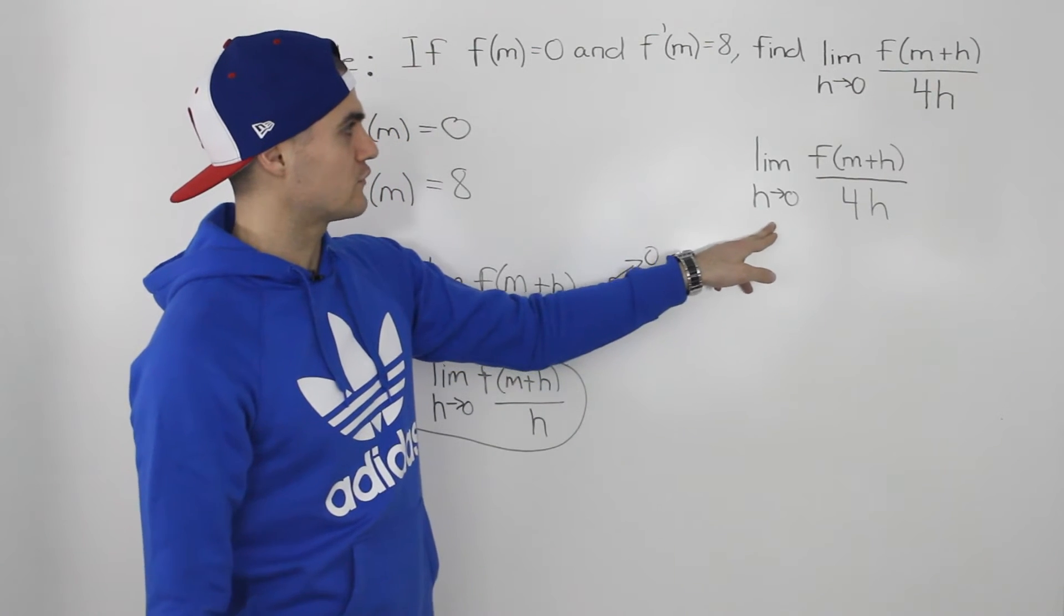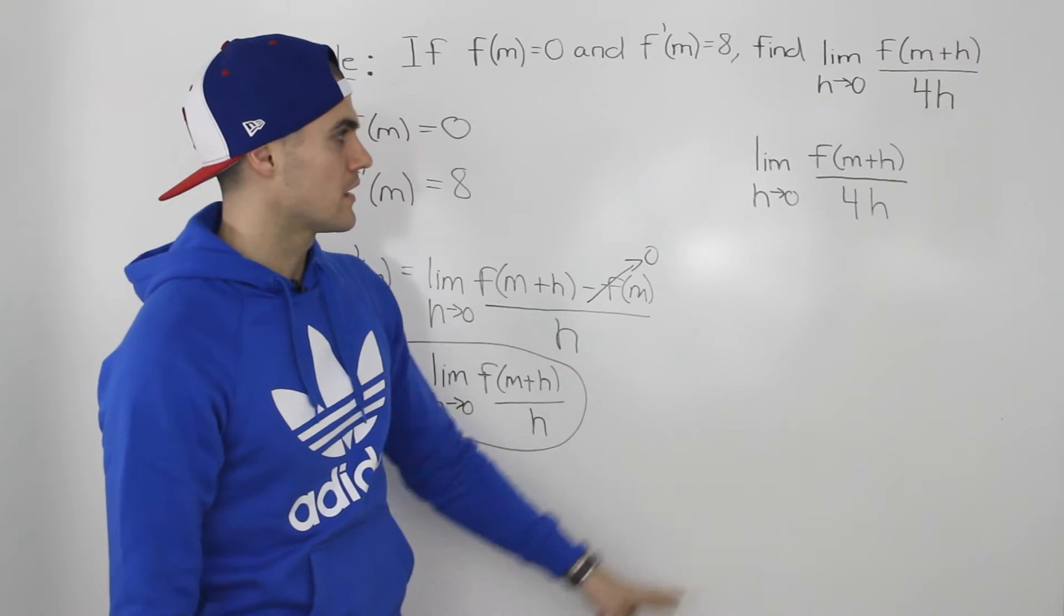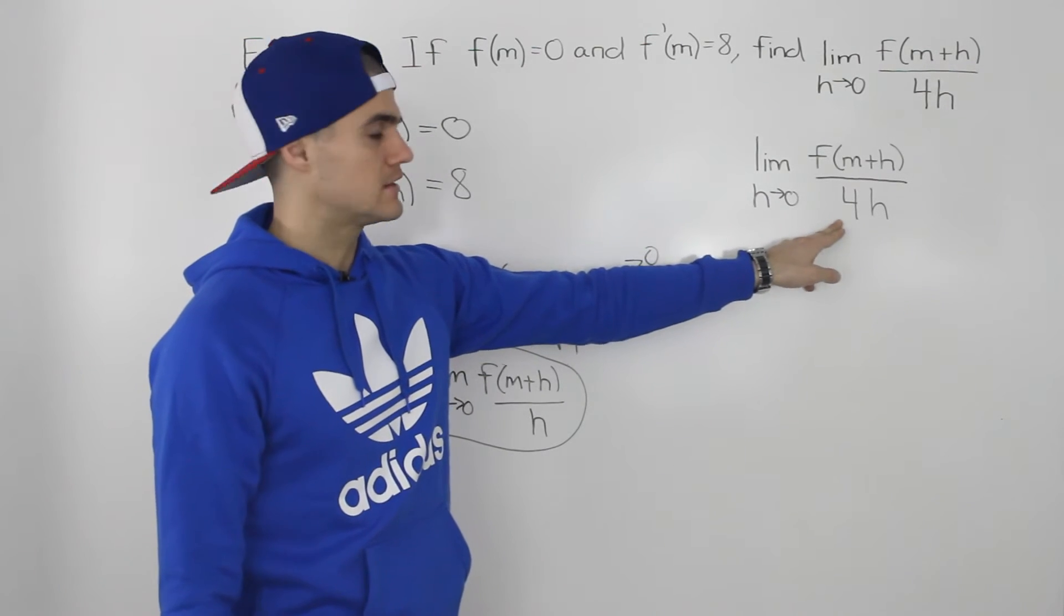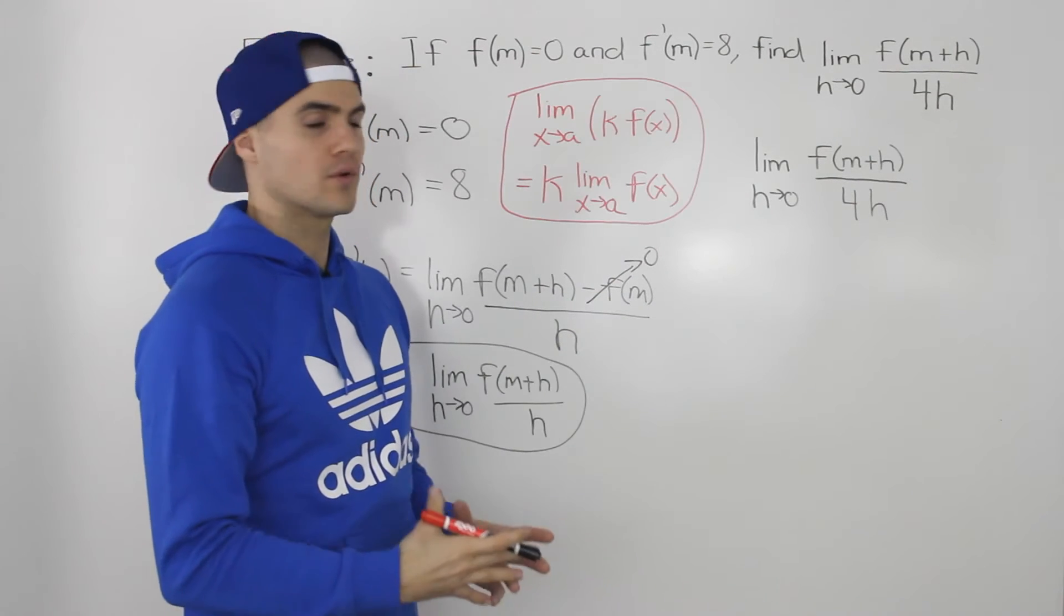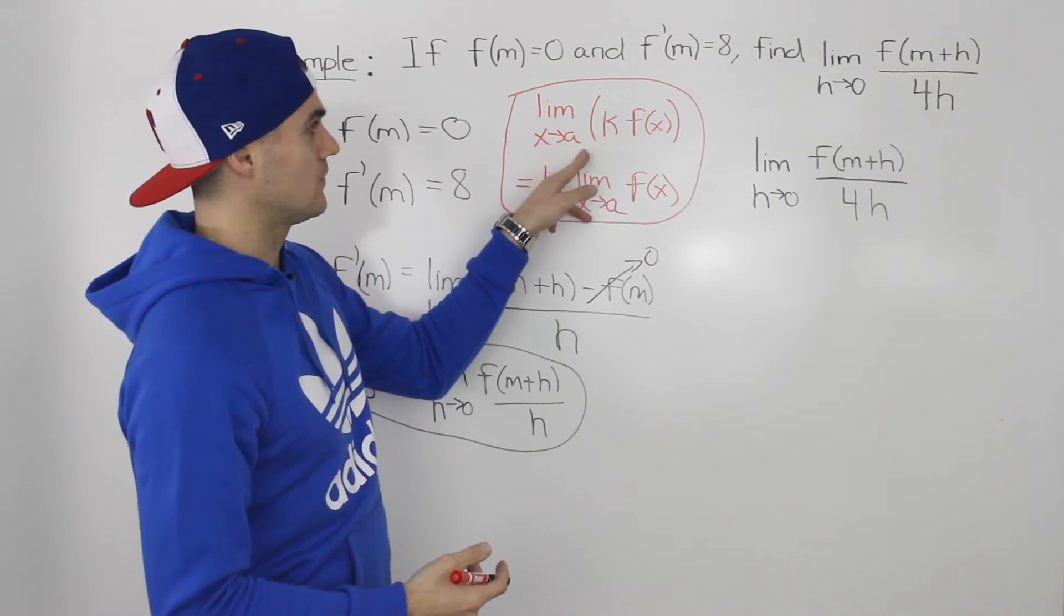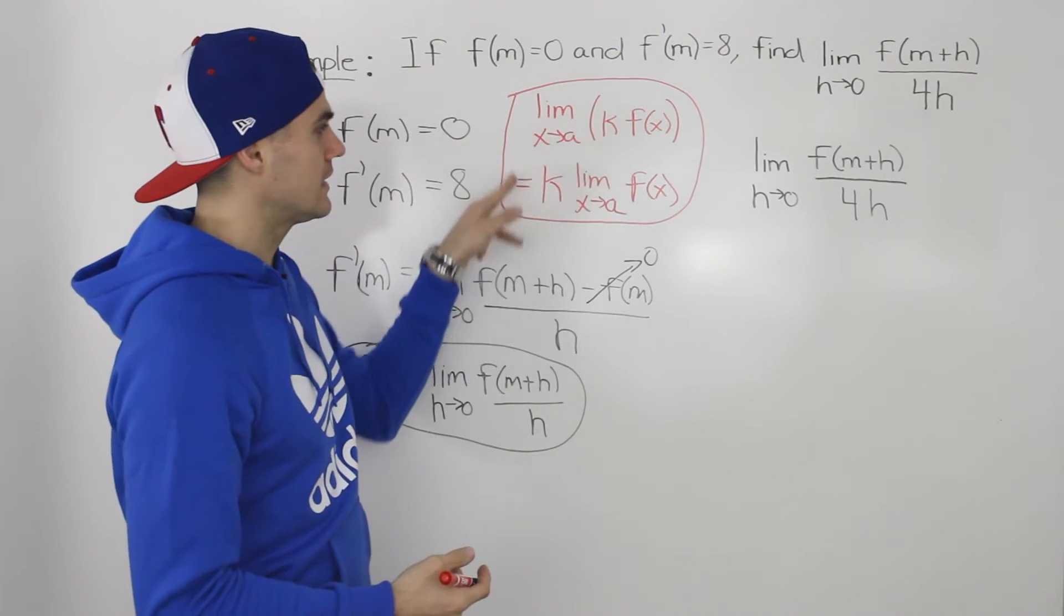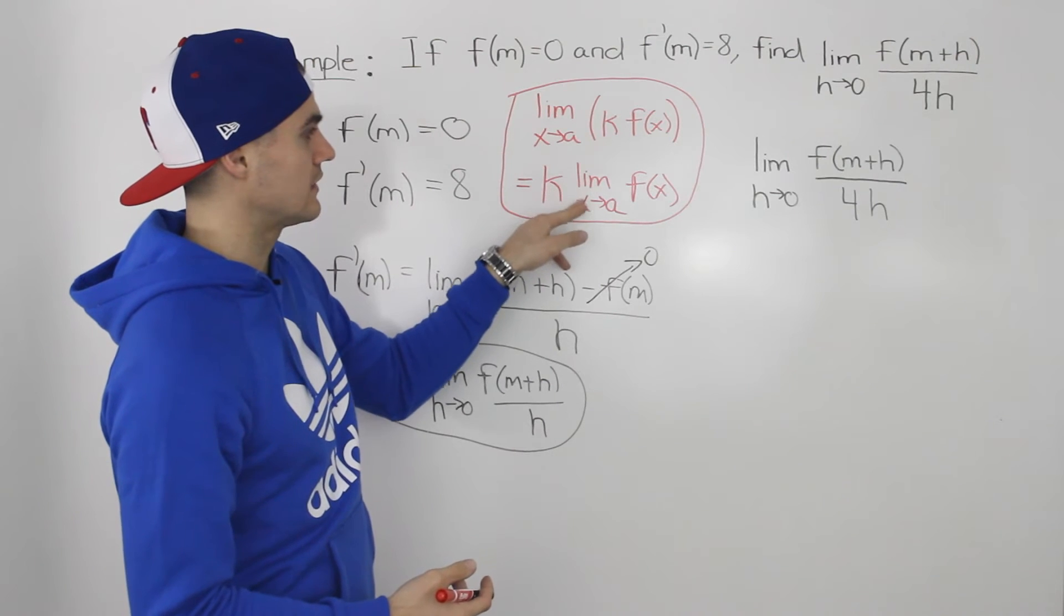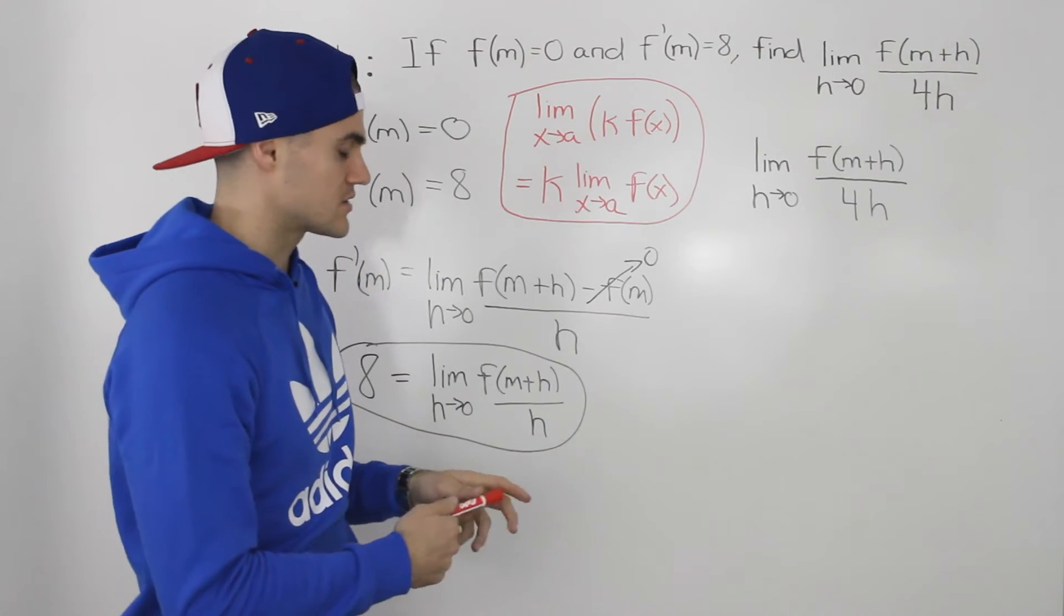So now rewriting what we have to find, this limit as h goes to 0 of f of m plus h all over 4h, notice how this 4 in the denominator we can take out as a constant. Because we know with the property of limits, that the limit as x approaches a value of a constant k times a function, we can take that k out and then just find the limit as x approaches a of that remaining function in the limit. So same thing here.